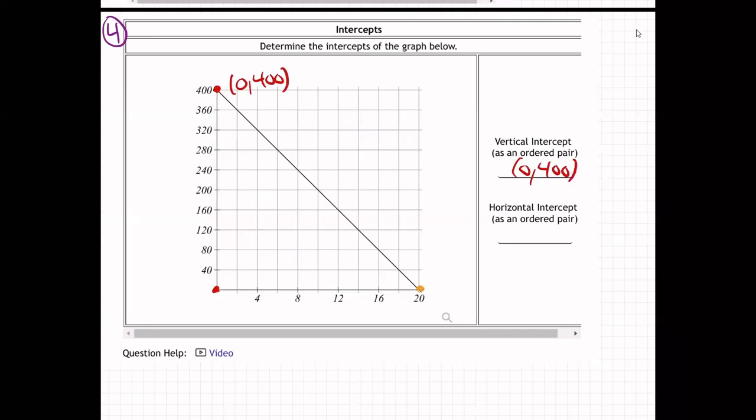And then there's this point here, which is over 20, up zero. That's where it hits the horizontal axis, the sideways axis.